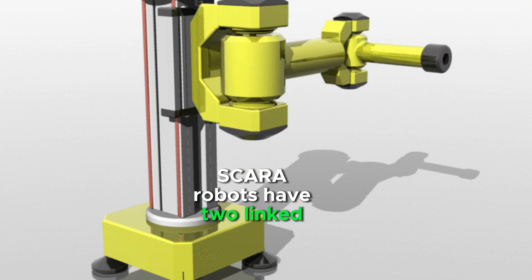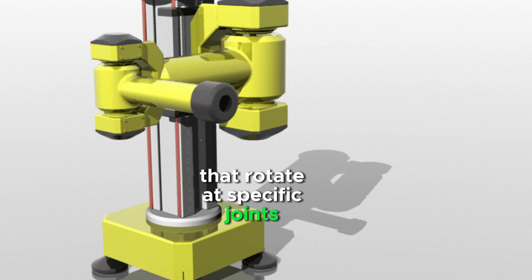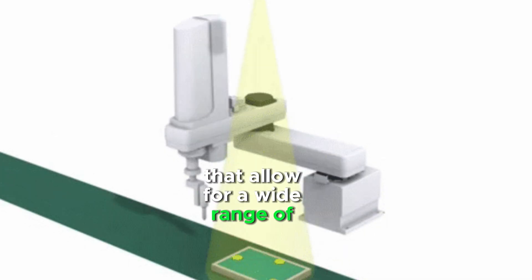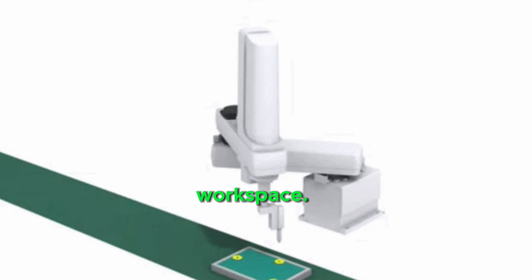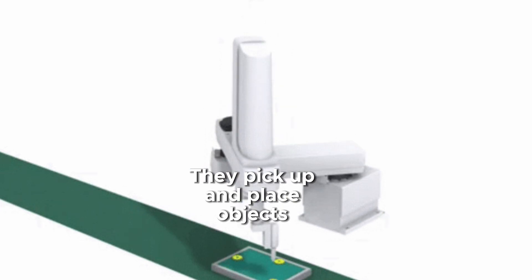SCARA robots have two linked arms that rotate at specific joints that allow for a wide range of motion within their horizontal workspace. They pick up and place objects accurately.